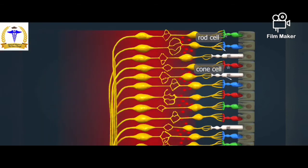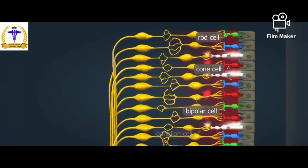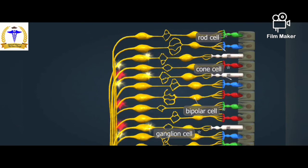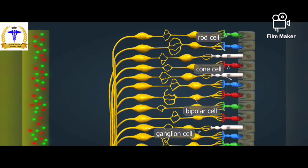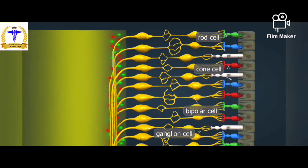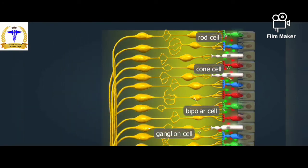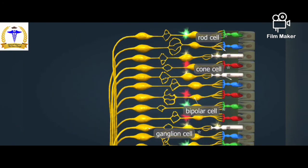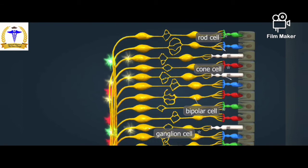The impulses produced by the receptors in the retina are transmitted to the brain by nerve fibers in the optic nerve. The receptors — rod cells and cone cells — transmit impulses to the bipolar cells, which stimulate ganglion cells. The axons of the ganglion cells form the optic nerve. The light-sensitive pigment in rod cells is rhodopsin, which consists of a protein called opsin and a vitamin A derivative called retinal. Rhodopsin is sensitive to light of any wavelength, so rod cells cannot differentiate between colors. The stimulation threshold of rod cells is low — a single photon is enough to stimulate them, so they work in weak light.